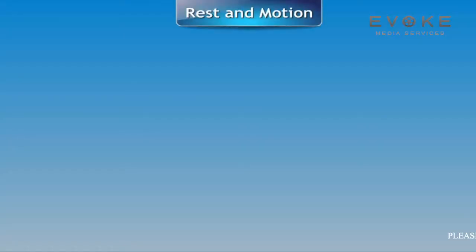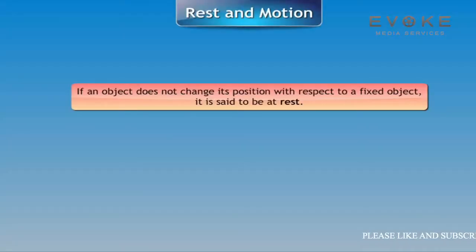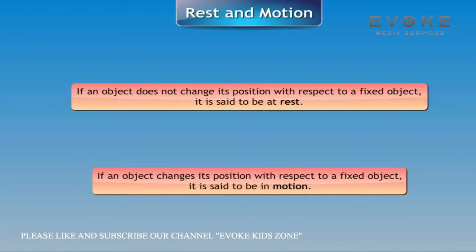Rest and motion: If an object does not change its position with respect to a fixed object, it is said to be at rest. If an object changes its position with respect to a fixed object, it is said to be in motion.